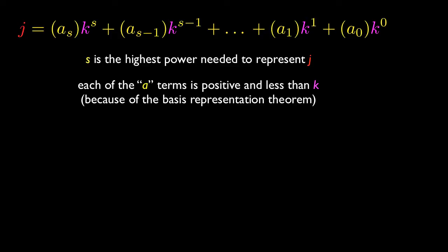A sub 0. All of those are positive terms, and they're less than k. So those are the numbers we multiply the powers by in order to represent j.